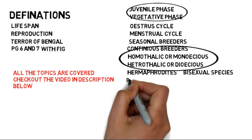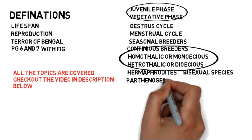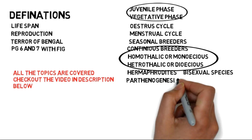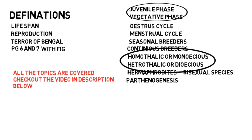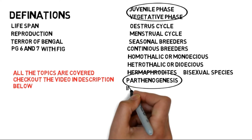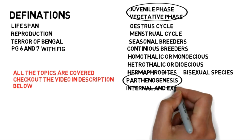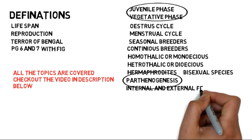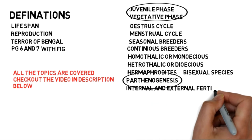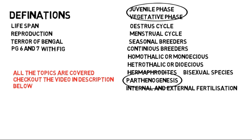Next is Parthenogenesis — zygote formation without fertilization is Parthenogenesis. Then, Internal and External Fertilization: internal fertilization is the fusion of gametes and ova inside the body, and external fertilization occurs outside the body.